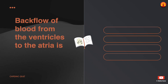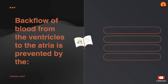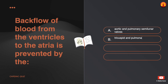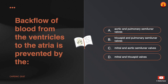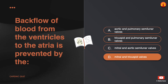Backflow of blood from the ventricles to the atria is prevented by the: A. Aortic and pulmonary semilunar valves. B. Tricuspid and pulmonary semilunar valves. C. Mitral and aortic semilunar valves. D. Mitral and tricuspid valves. The correct answer is: mitral and tricuspid valves.